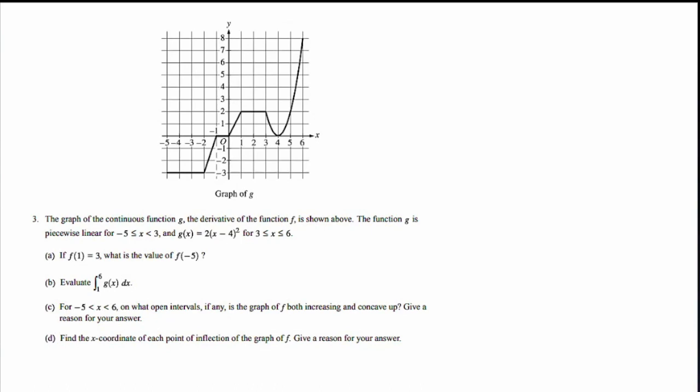I'm going to stop and write down what I just read. The continuous function g is the derivative of f, so I'm going to write g equals f prime. So that's the connection between g and f. This graph that we're given here is actually f prime. The function g is piecewise linear from negative 5 to 3, and then you have this parabola 2 times (x minus 4) squared between 3 and 6.